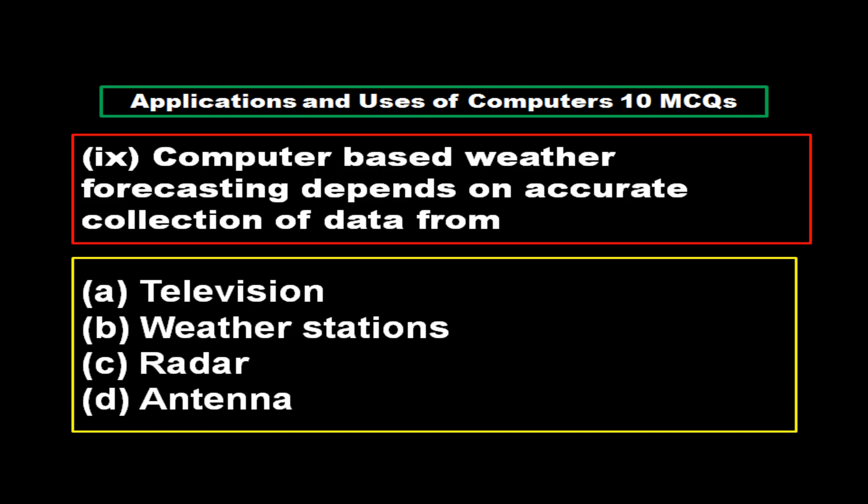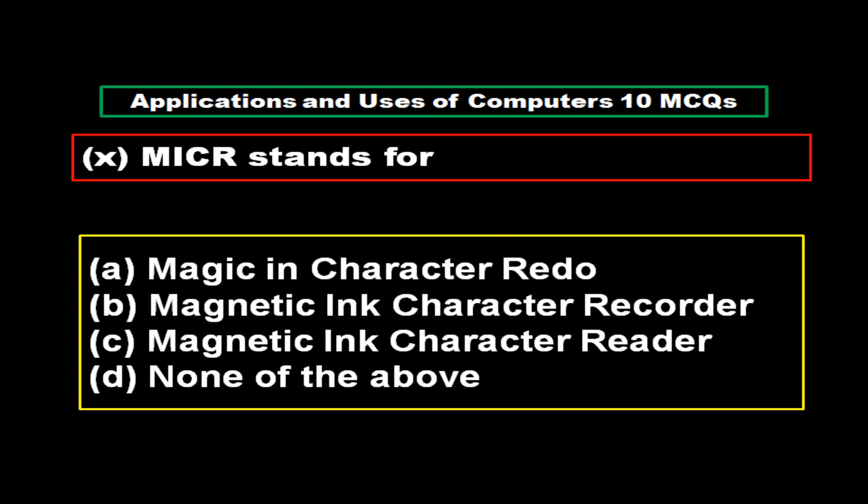Computer Based Weather Forecasting depends on accurate collection of data from: Option A Television, Option B Weather Stations, Option C Radar, Option D Antenna. And the right answer is Option B: Weather Stations.